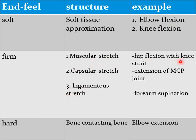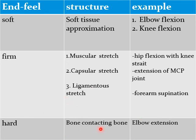Firm end feel from ligament stretch occurs for example during forearm supination. Hard end feel has a structure of bone contacting bone — for example, elbow extension.